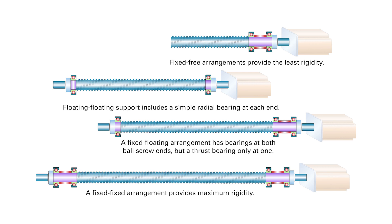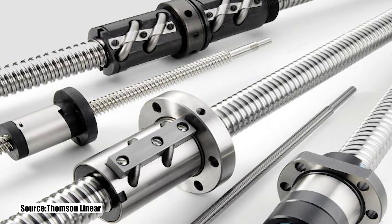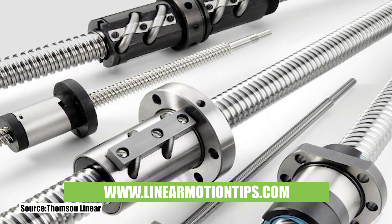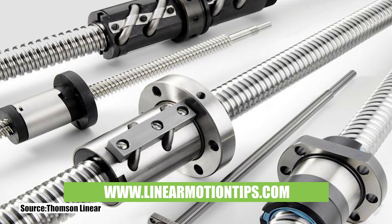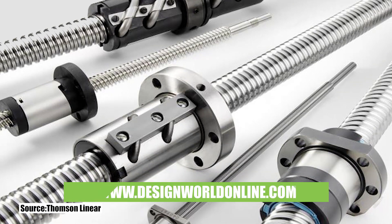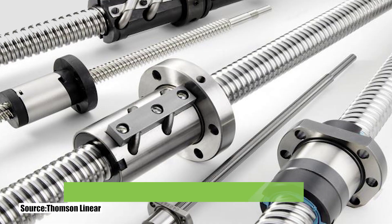And remember, the reason rigidity is important for ball screw assemblies is to reduce axial deflection and ensure the screw's positioning accuracy isn't compromised. For more information on ball screws and other linear motion topics, visit LinearMotionTips.com or DesignWorldOnline.com. Thanks for watching!